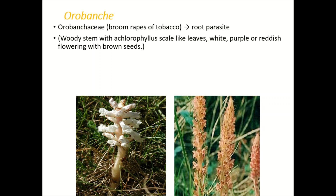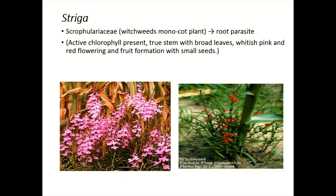The Orobanchaceae family — these cause broomrapes of tobacco. These are root parasites with a woody stem and achlorophyllous, scale-like leaves. They have white, purple, or reddish flowers with brown seeds.